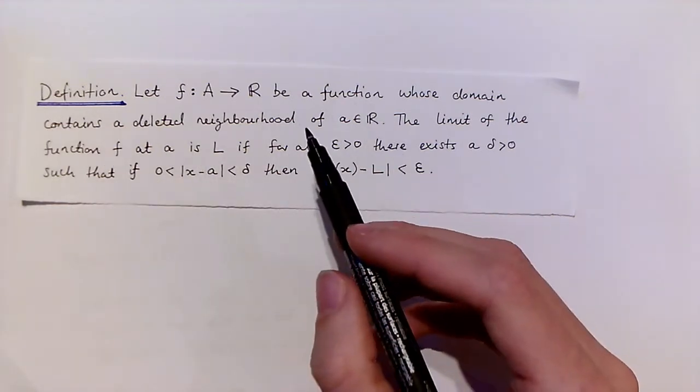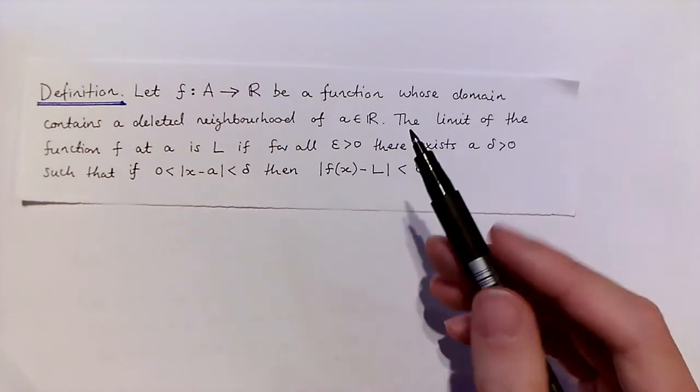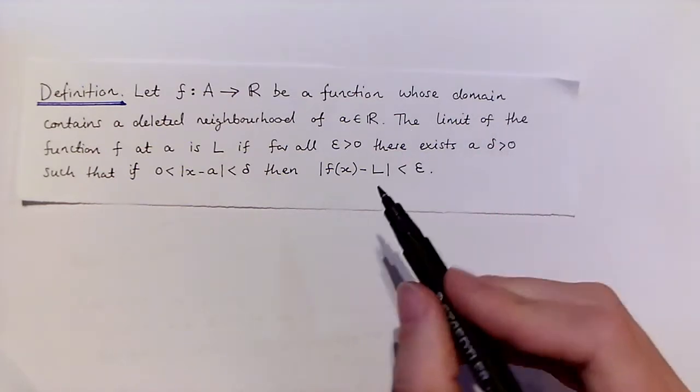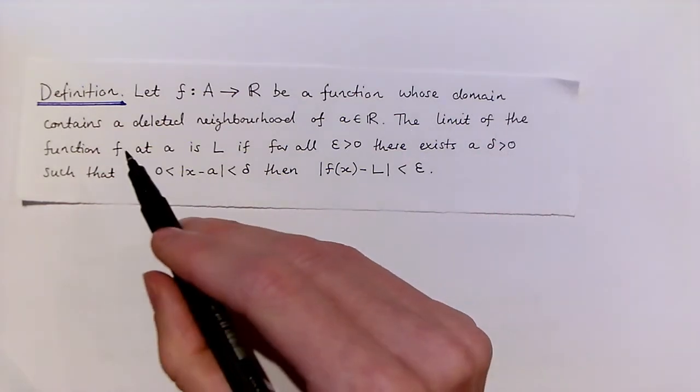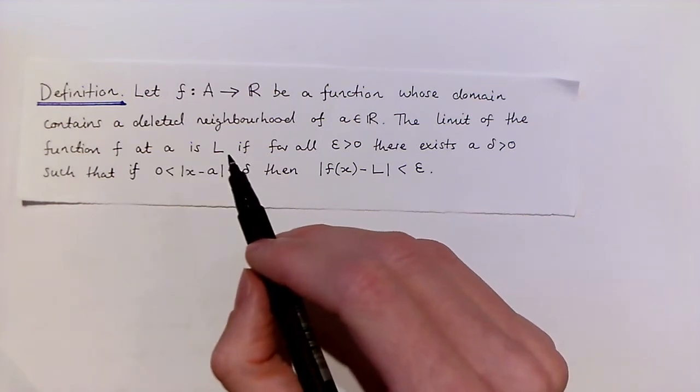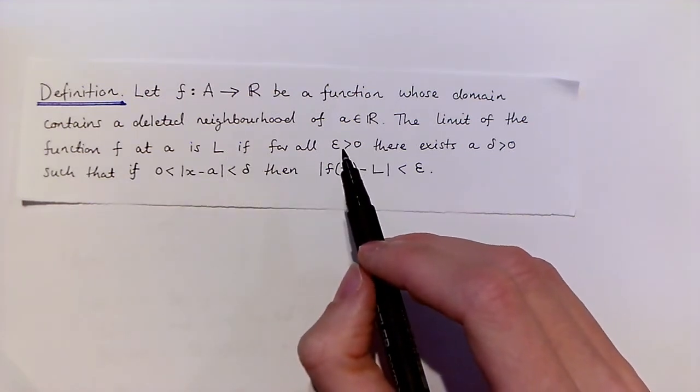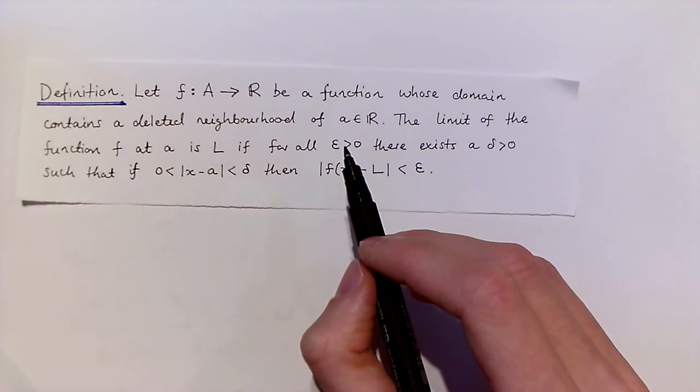This definition can be a lot to take in when you first encounter it, so let's look through the definition one more time. We're saying that the limit of the function f at a is l if, given any positive number epsilon, however small epsilon is chosen,